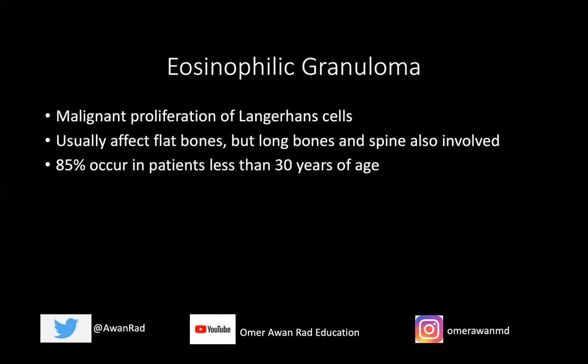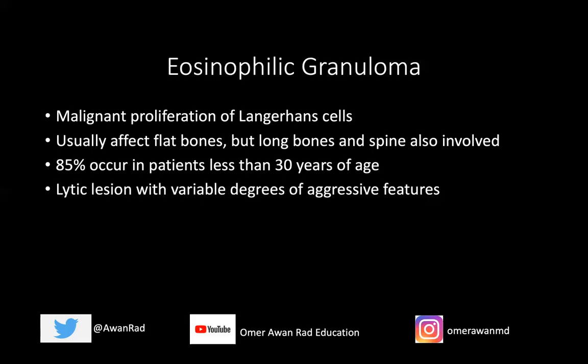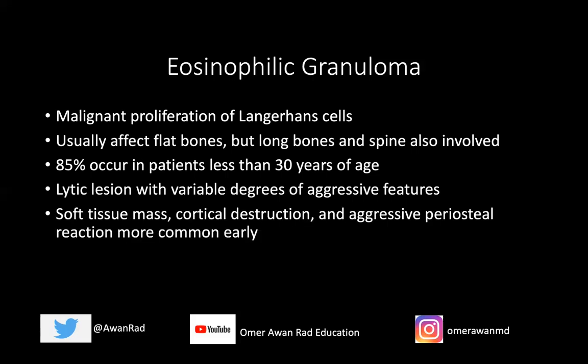The vast majority of EG cases occur in young people — 85% in patients less than 30 years of age. Our patient was 37; it can happen at any age, even in 70-year-olds. It usually has a lytic or radiolucent appearance, but can have aggressive features including a soft tissue mass or aggressive periosteal reaction. So it doesn't necessarily appear the way I showed it on today's radiograph. There can be cortical destruction and very aggressive features that make diagnosis confusing — which is why sometimes we have to biopsy.